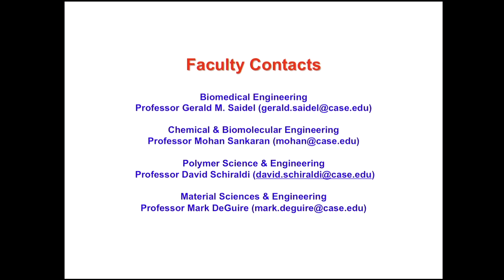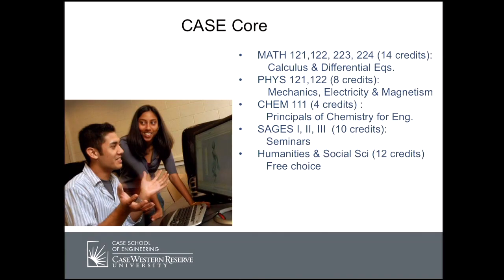We'd like to start talking about the core of the engineering degree. The first part of the CASE core are the math, physics, chemistry, and Sages communication courses as well as humanities and social sciences. As an incoming student you will be taking calculus courses — there are four required courses and you will come in at whatever level is appropriate for you. You will take two semesters of physics, a semester of freshman chemistry, and three Sages writing and communication courses. Typically you'll take two of those in your first year and one in your second year. You will also take twelve credits of humanities and social sciences, which you can start early and spread out over the years.